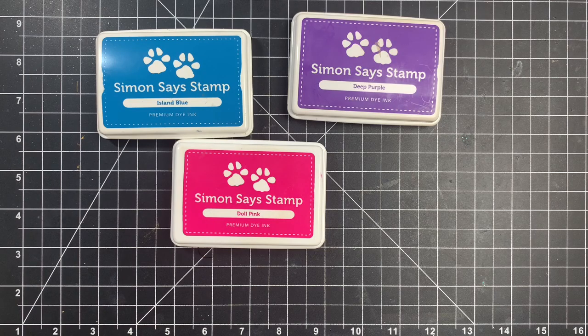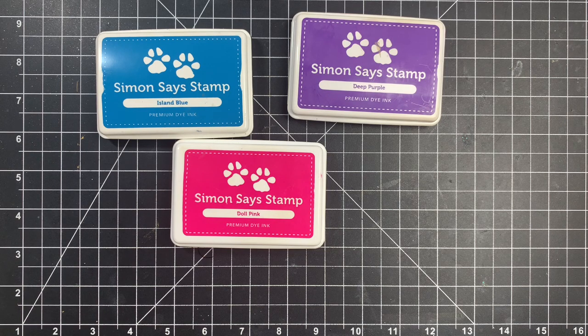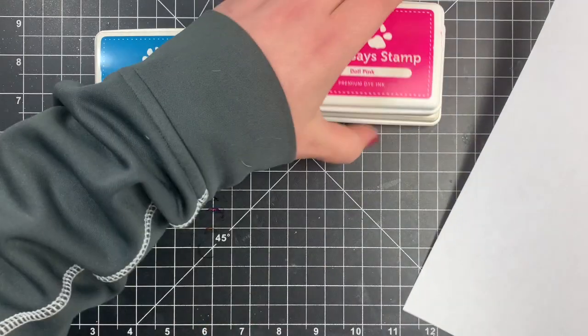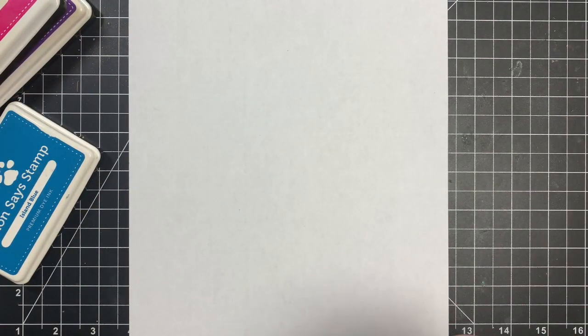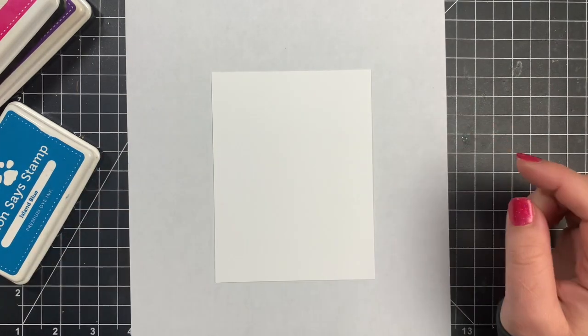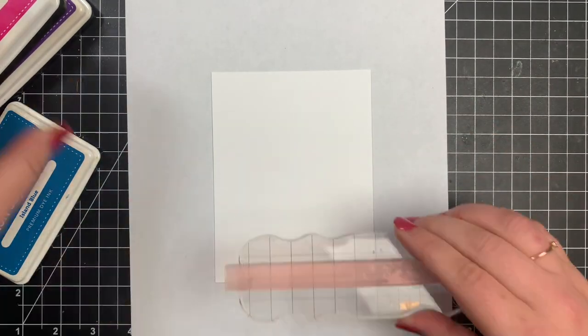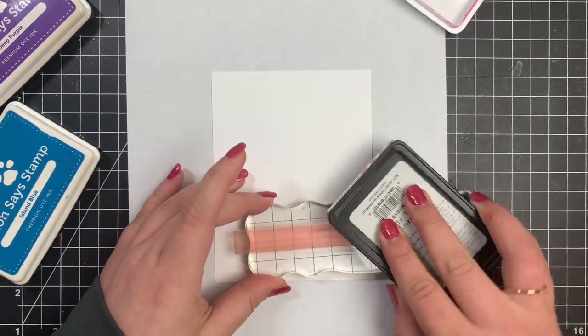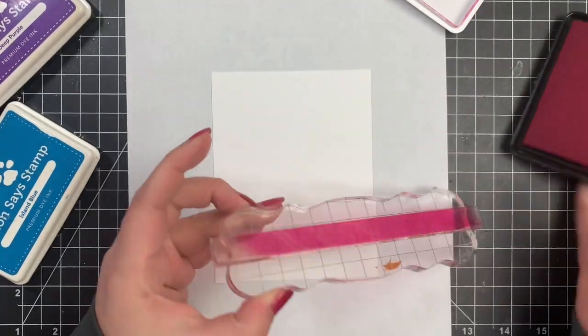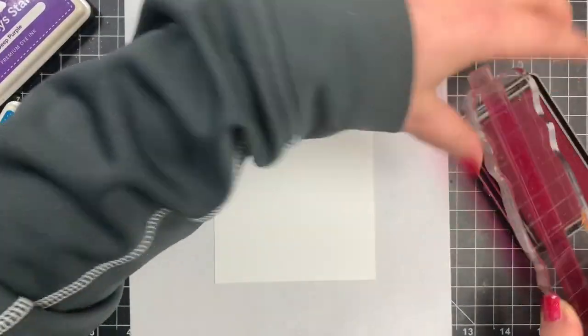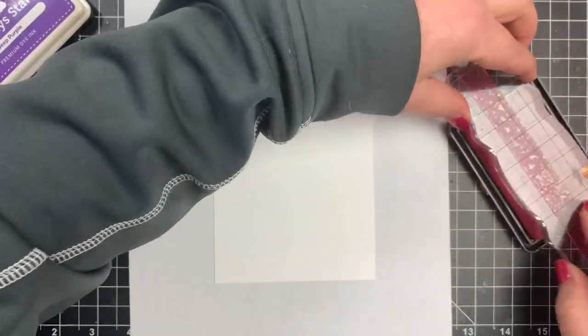So I'm going to use three different colors of Simon Says Stamp dye inks, which have also been in my stash for many years. And I've never had to repurchase any of them. They are still nice and inky. I love these inks. They are more of a shadow ink. So keep in mind that once you first stamp, they look a little blotchy, but as they dry and even out, they will look a little bit more solid.